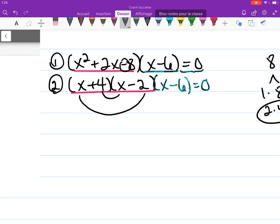Now, using the zero product property we put each of these equal to 0 and solve for x. So you have x + 4 = 0, x - 2 = 0, x - 6 = 0.